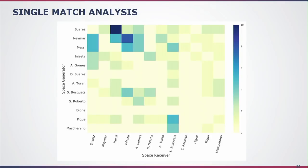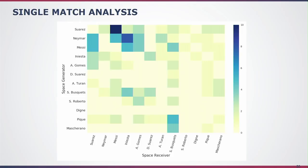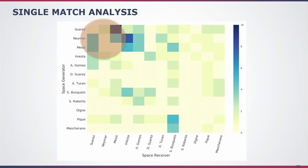An additional piece of high value is understanding who is generating space for whom. The y-axis shows space generators and the x-axis shows space receivers. Busquets is able to generate space for almost any other player on the team and also receives space from them — he's moving all around and positioning himself onto spaces of greater value throughout the match. In this match with Neymar, Suarez, and Messi playing together, the interesting thing is it's not just about putting three skillful players on the attack. They generate space for each other in very different combinations, and seeing these clips helps coaches understand if these patterns match their intentions.